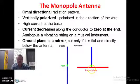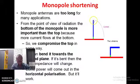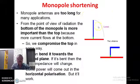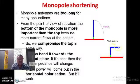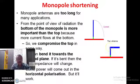We know that current is minimum at the edge and maximum at the ground plane, and therefore it is always better to compromise the top rather than the bottom of a monopole antenna. To reduce the height of the antenna, we bend the monopole antenna parallel to the ground plane. While doing this it gives some horizontal polarization, but we can accept that price — reducing the height is more important than maintaining vertical polarization.